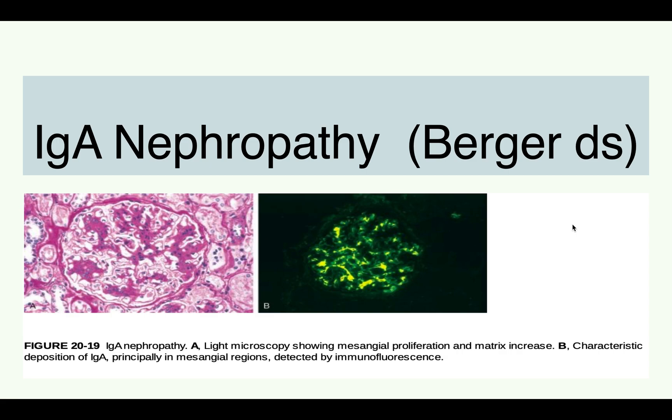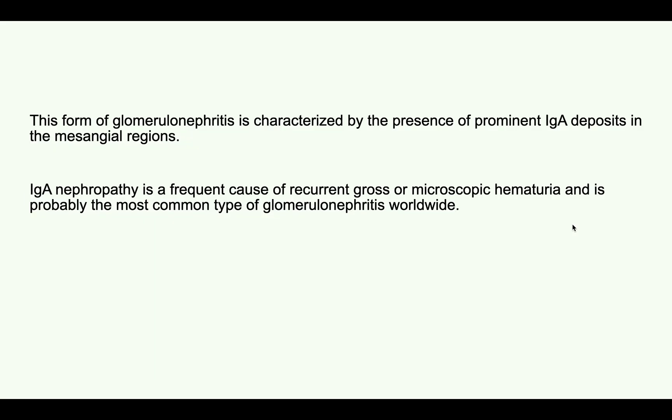We will discuss IgA nephropathy, which also goes by the name Berger's disease. A few key points: as the name suggests, there are IgA deposits present in the mesangium. This is important — the deposits are present in the mesangium. Second, it is the most common type of glomerular nephritis worldwide.